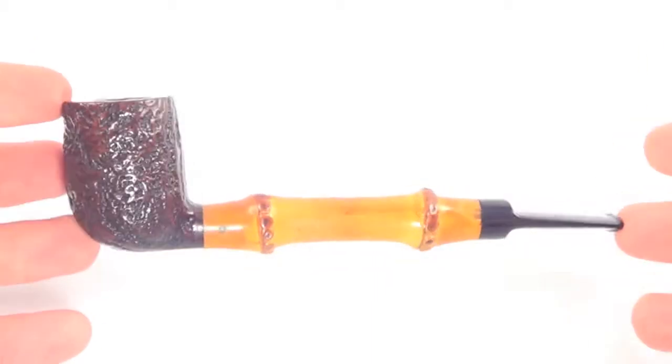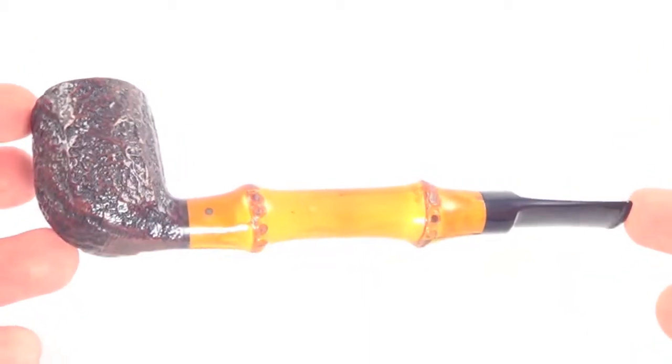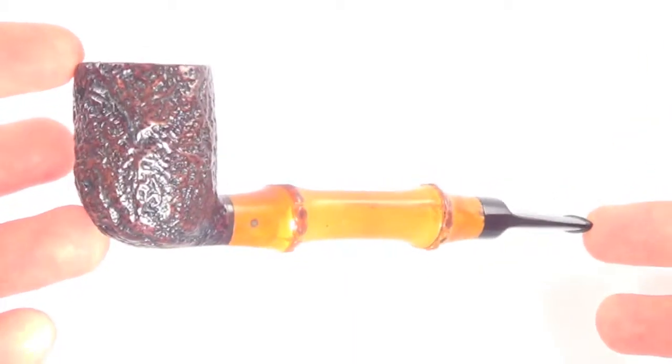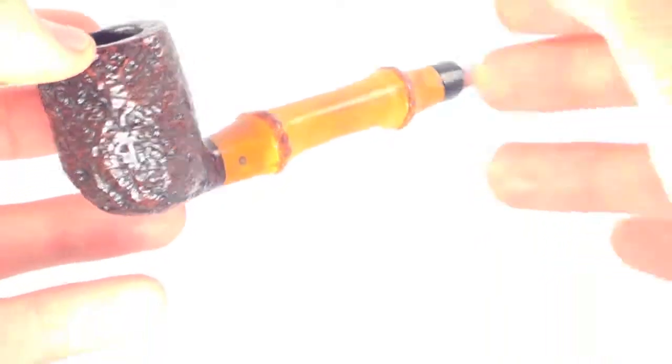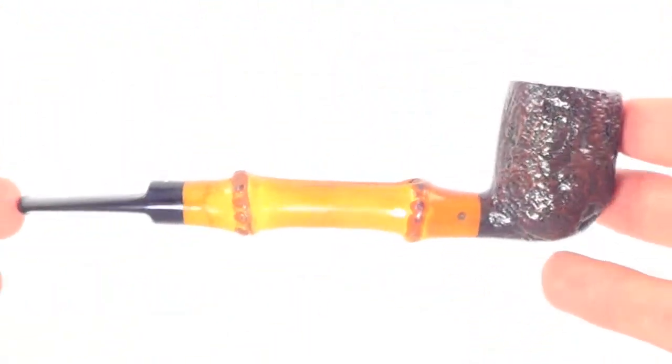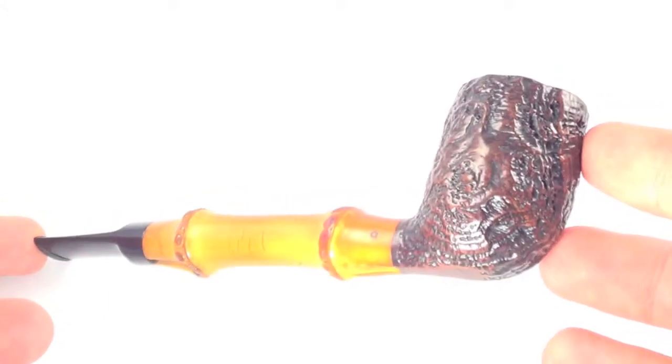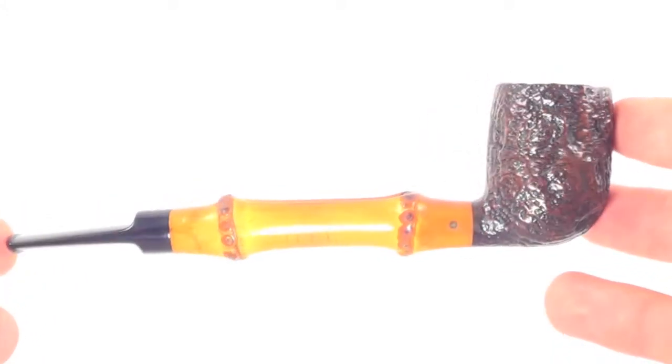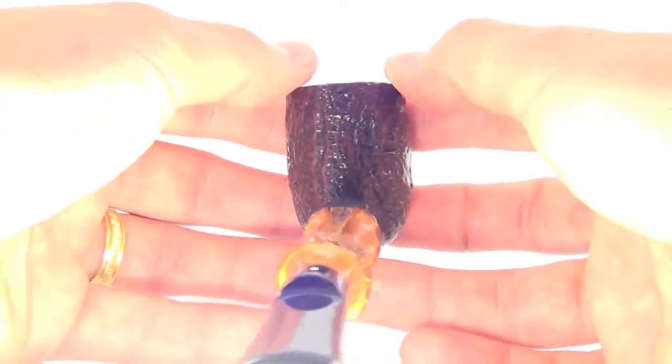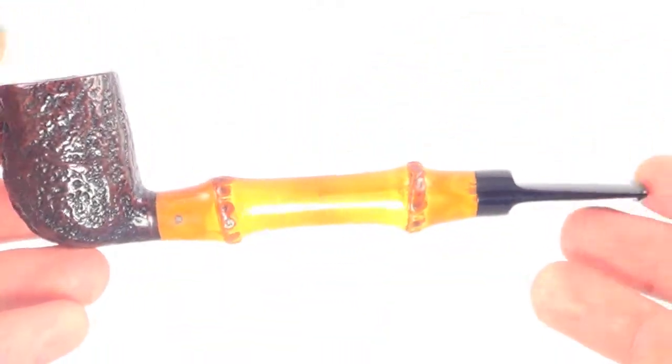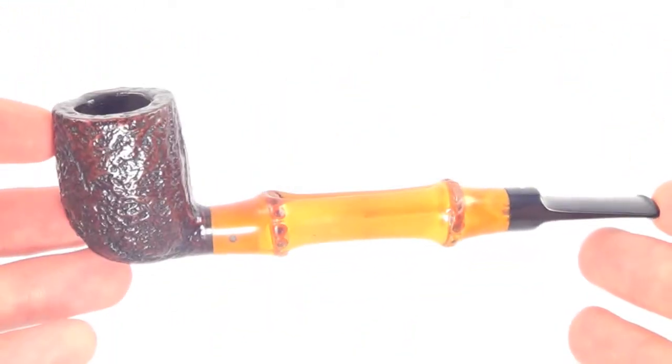Here's a beautiful Dunhill Shell Group 4 smoking pipe with that nice bamboo shank extension. And this pipe from my best estimates is from 1966 and it's an absolutely great shape for how old it is.